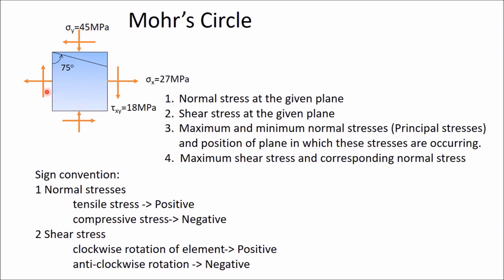These two shear stress planes are called the x-plane and the y-plane. In the x-plane, the shear stresses are tending to rotate the element in the clockwise direction, so tau xy is positive in the x-plane. In the y-plane, the shear stresses are tending to rotate the element in the anticlockwise direction, so those shear stresses are negative according to our sign convention.